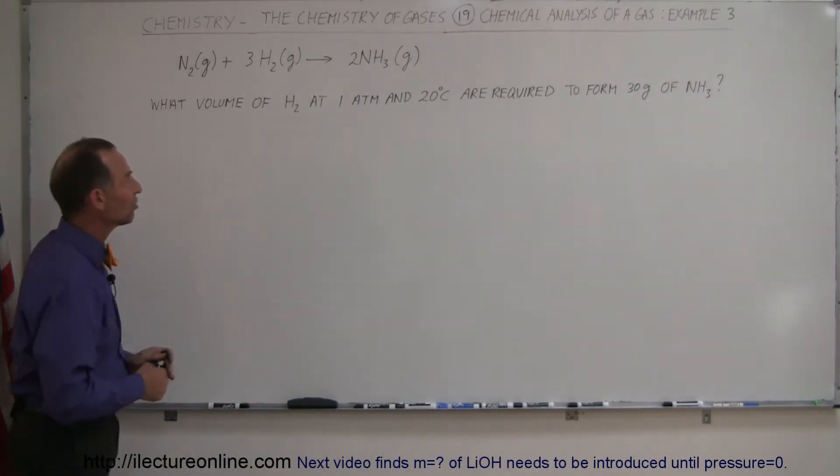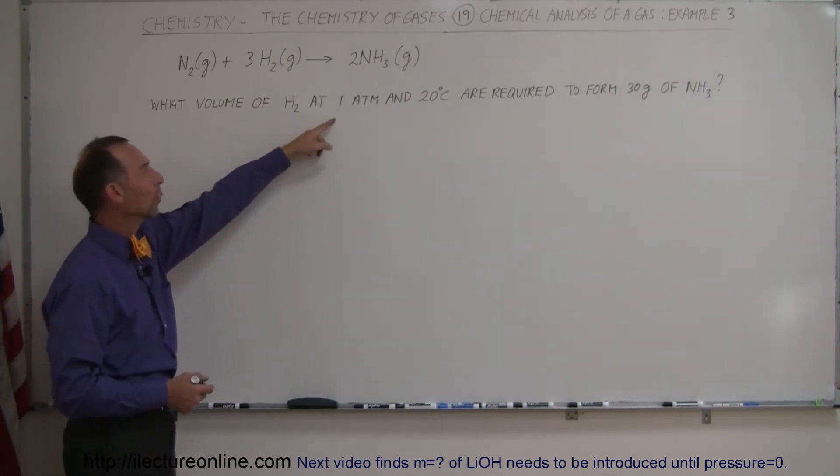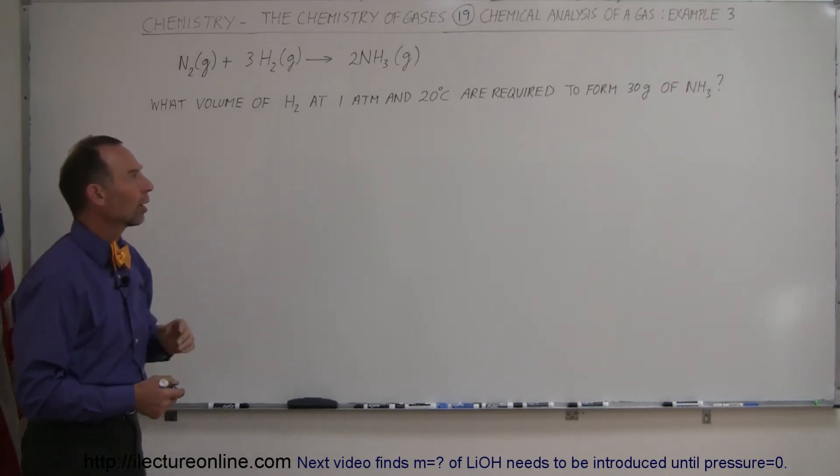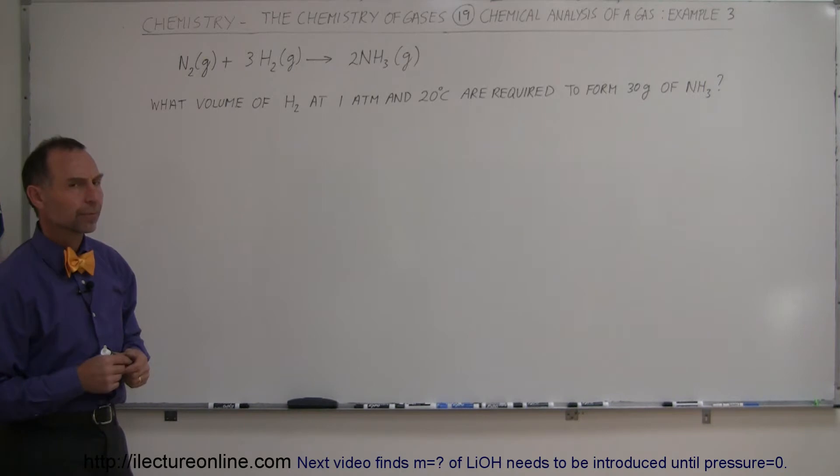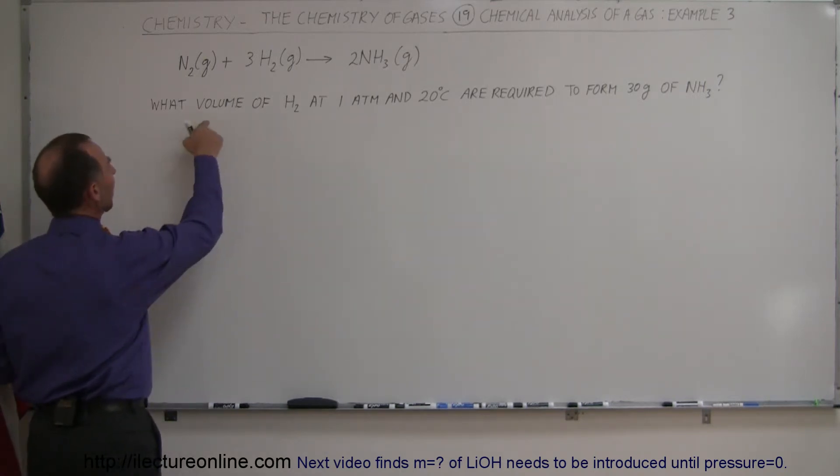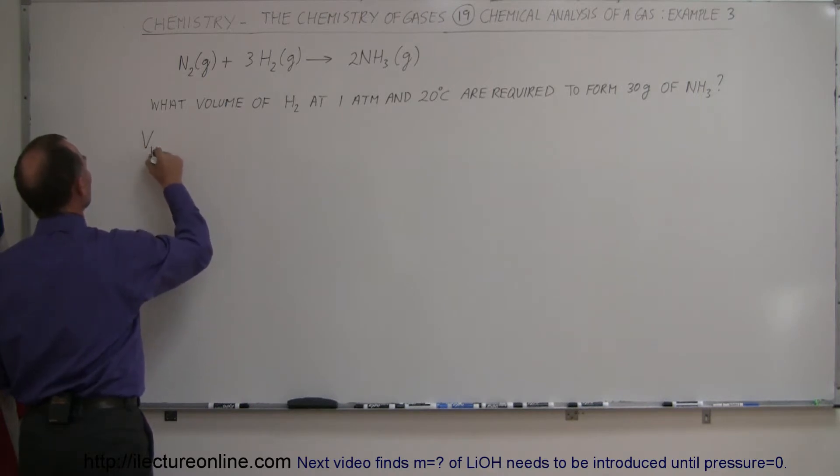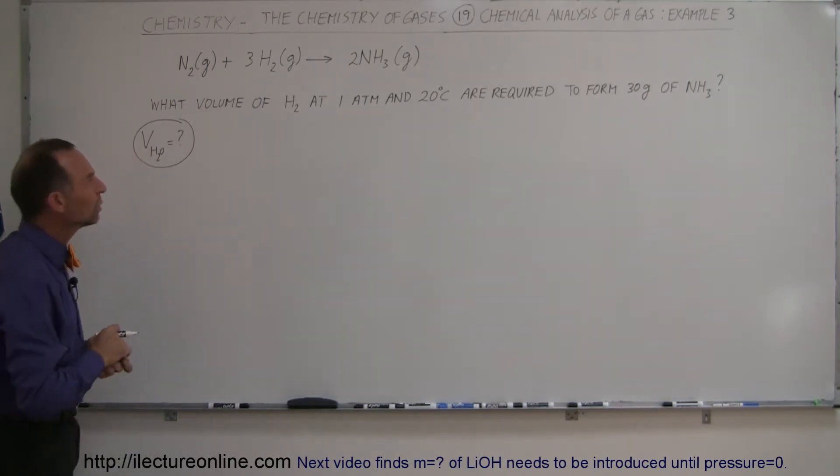It's a balanced equation now and they're asking us what volume of the hydrogen gas at one atmosphere and 20 degrees centigrade are required to form 30 grams of ammonia. So they're asking for volume of the H2, which equals question mark. All right, so what kind of equation do we need for that?